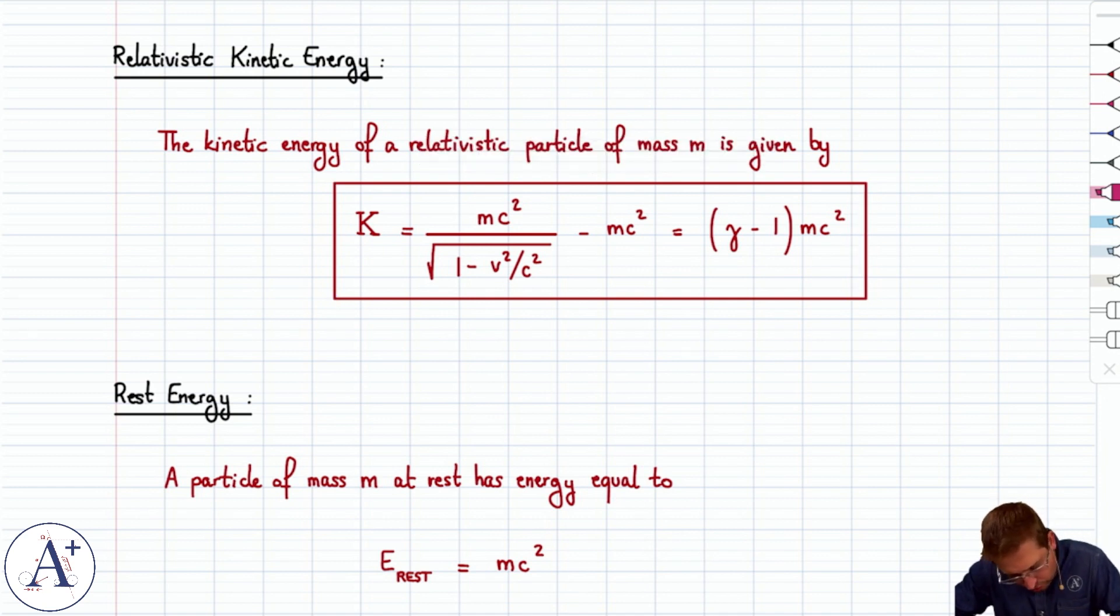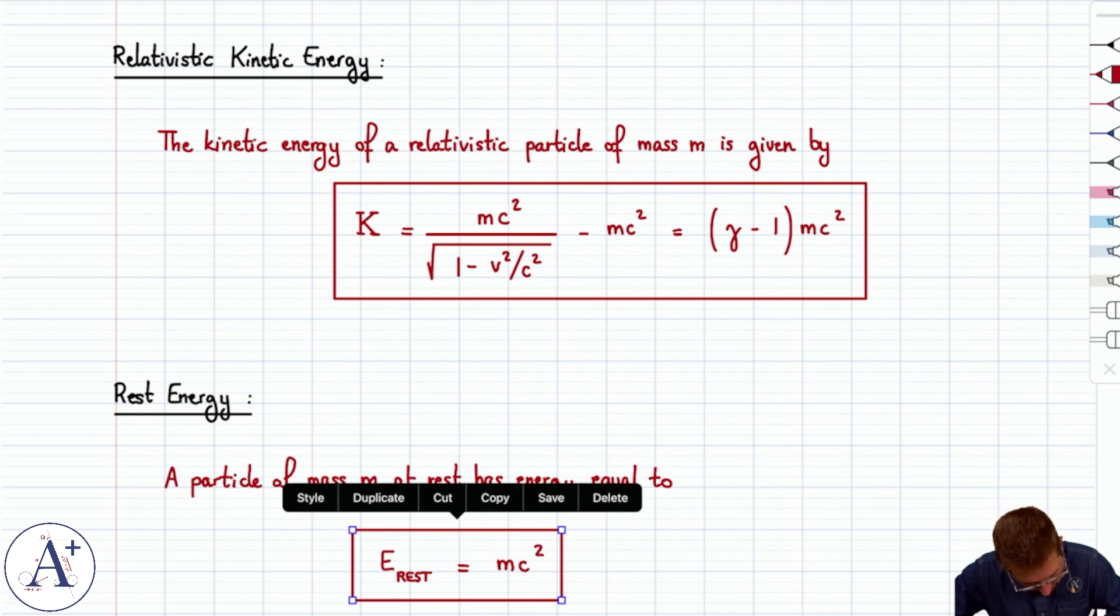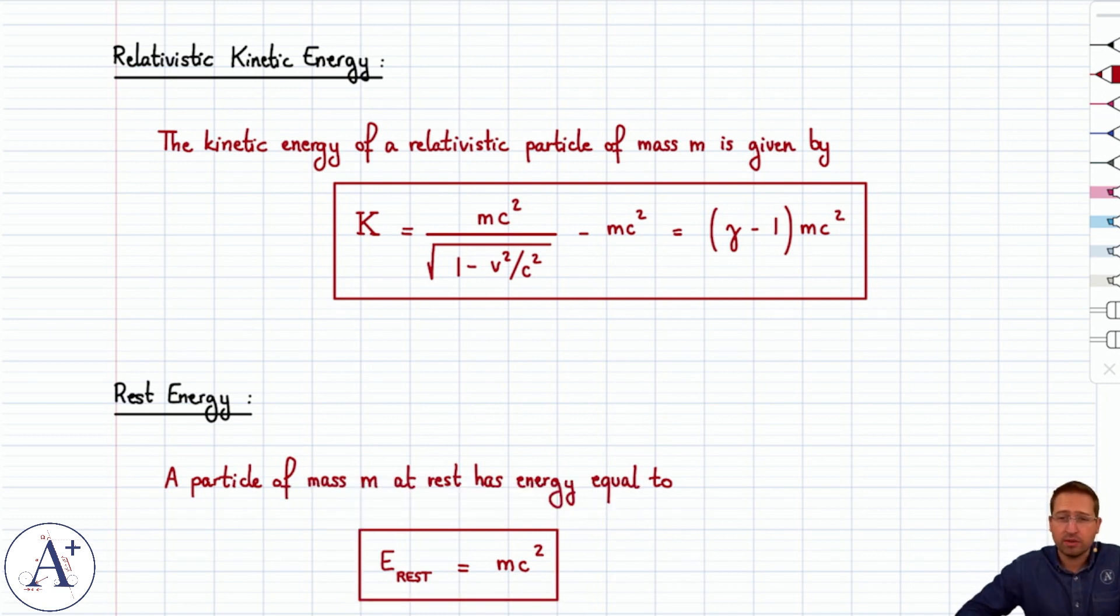And the term that you subtract here in the formula, the minus mc squared, is actually the rest energy that's getting subtracted. And so the rest energy E rest equals mc squared. Meaning that a particle of mass m, because it is at rest and because it has mass, has an energy of mc squared.